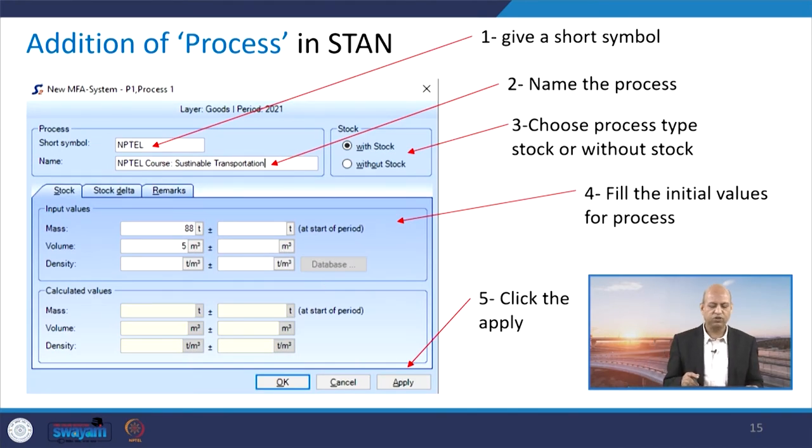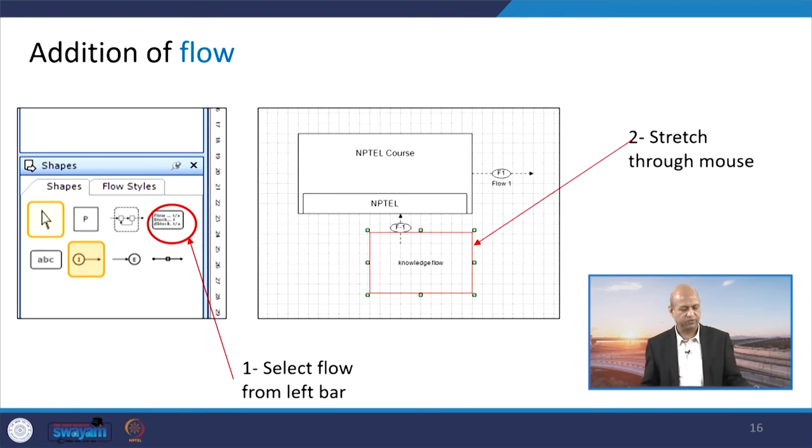Then when we talk about how to add the new process, for example, we have just given a randomly name because this is NPTEL course. We are talking about like symbol can be used NPTEL, NPTEL core sustainable, so you can give whatever name you want. Then mass related values, volume related values, all these values can be chosen from your fill. You can fill manually also and then you can apply, so that would be the input layer you can say.